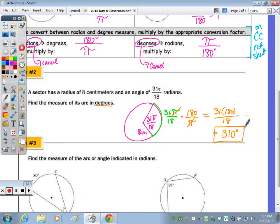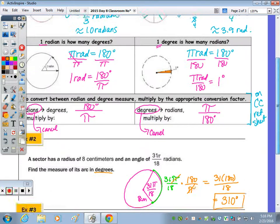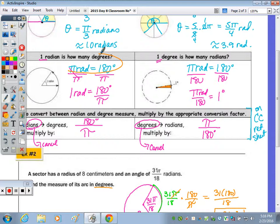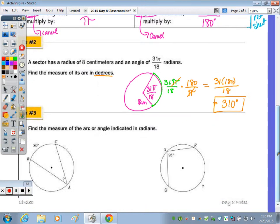Since the pi's cancel every time, and we know that this here, pi is equivalent to 180, instead of multiplying by 180 over pi, you can make the direct substitution. So I can just do 31 times 180 over 18, because pi is equivalent to 180 degrees.